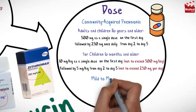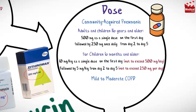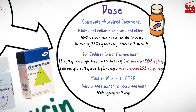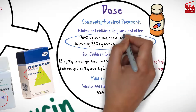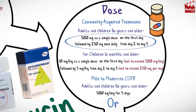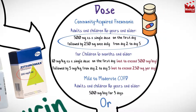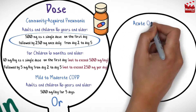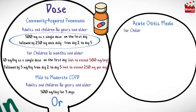The usual dose for mild to moderate chronic obstructive pulmonary disease for adults and children 16 years and older is 500 milligrams per day for three days, or 500 milligrams as a single dose on the first day followed by 250 milligrams once daily from day 2 to day 5.